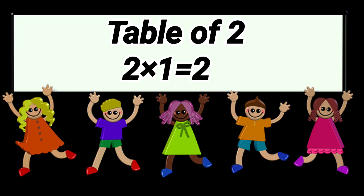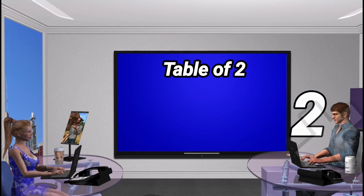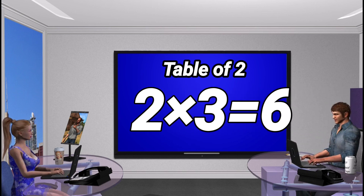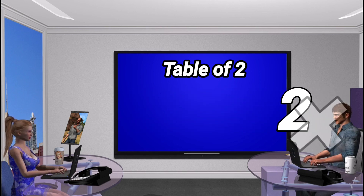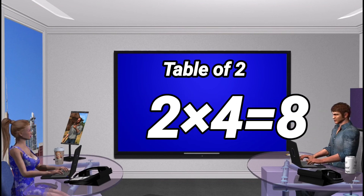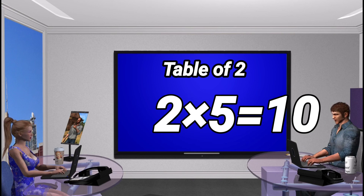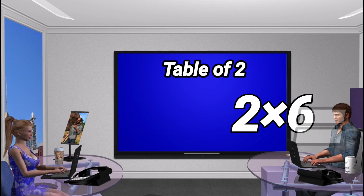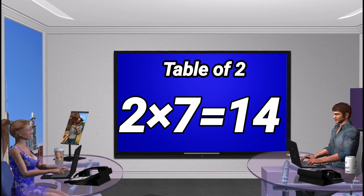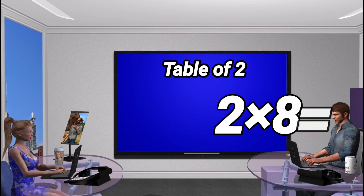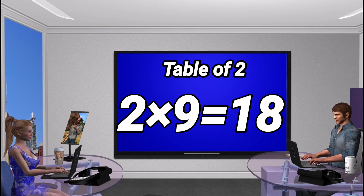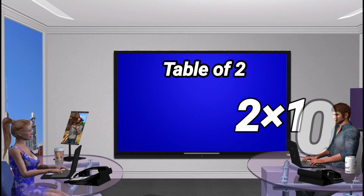Table of 2. 2 times 1 is 2. 2 times 2 is 4. 2 times 3 is 6. 2 times 4 is 8. 2 times 5 is 10. 2 times 6 is 12. 2 times 7 is 14. 2 times 8 is 16. 2 times 9 is 18. 2 times 10 is 20.